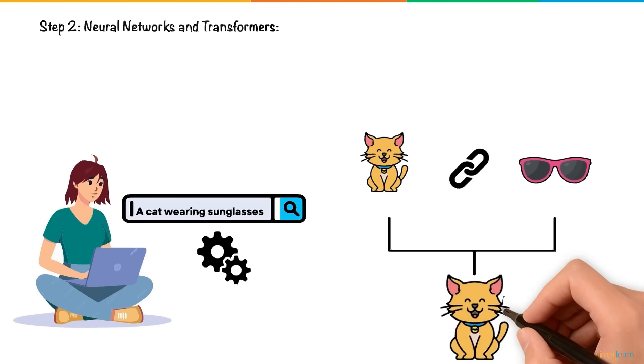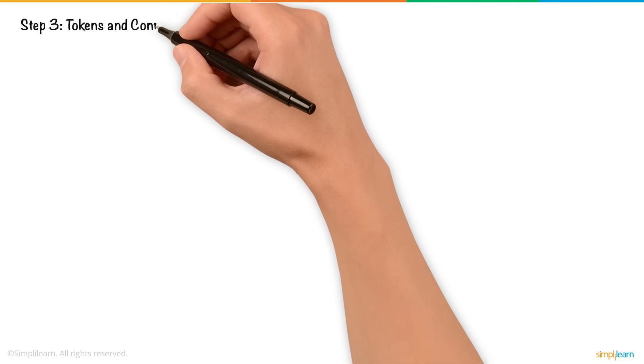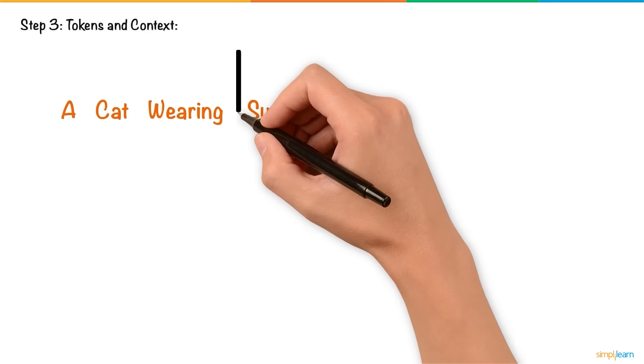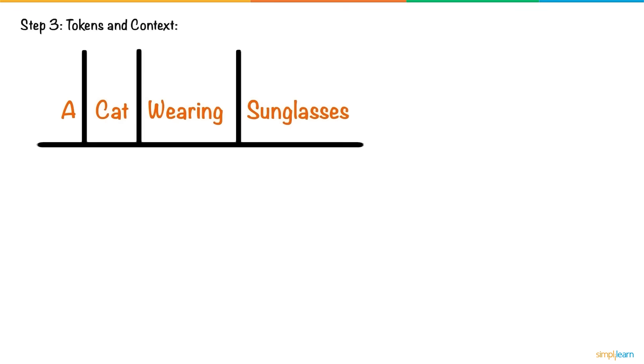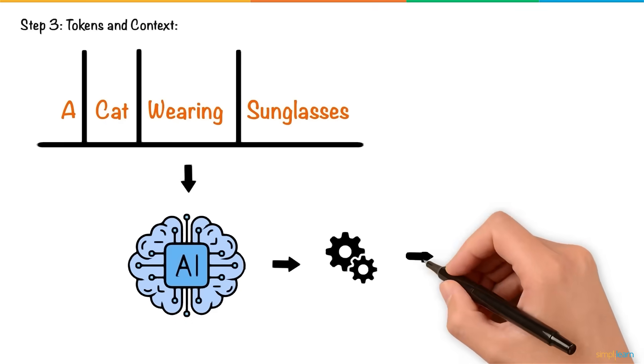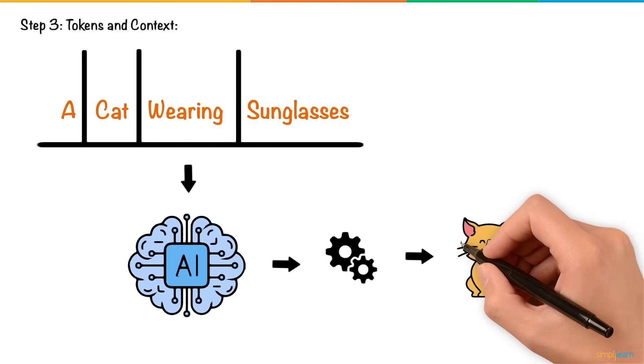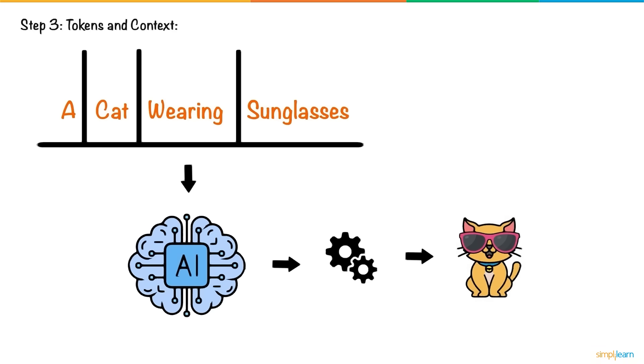Tokens and Context: The text input, such as 'a cat wearing sunglasses,' is split into smaller parts called tokens. The AI processes each token and understands their relationship. For instance, it knows the sunglasses should be placed on the cat, creating a contextually accurate image.